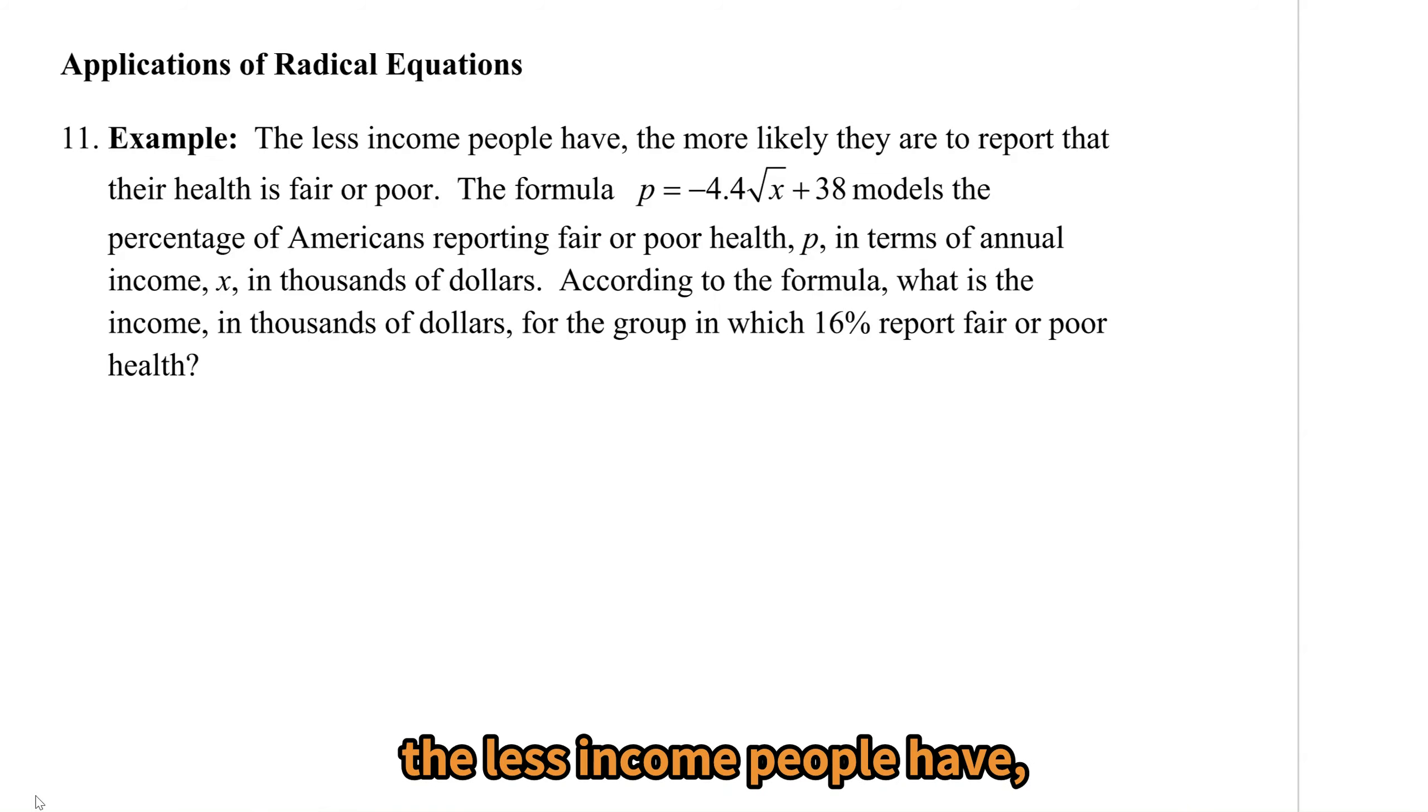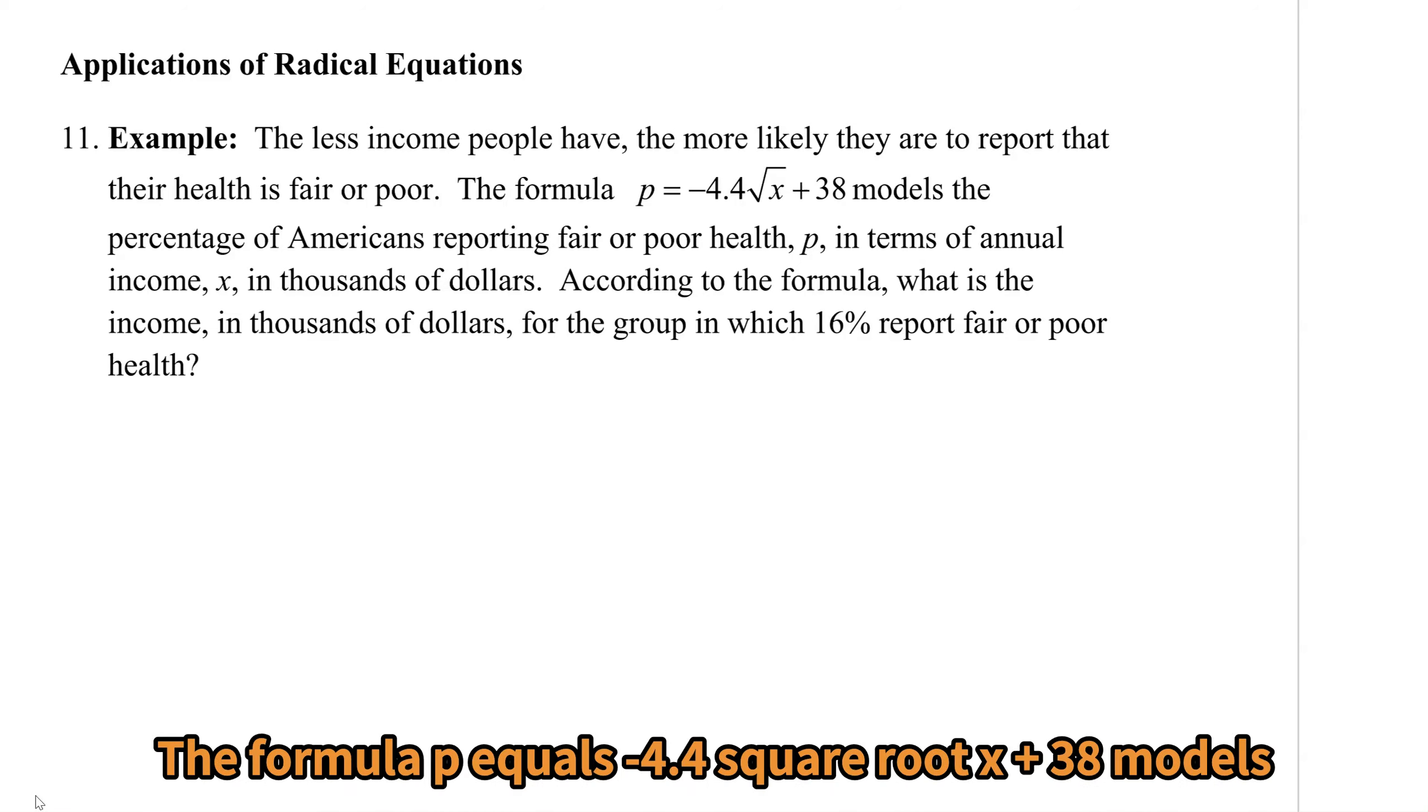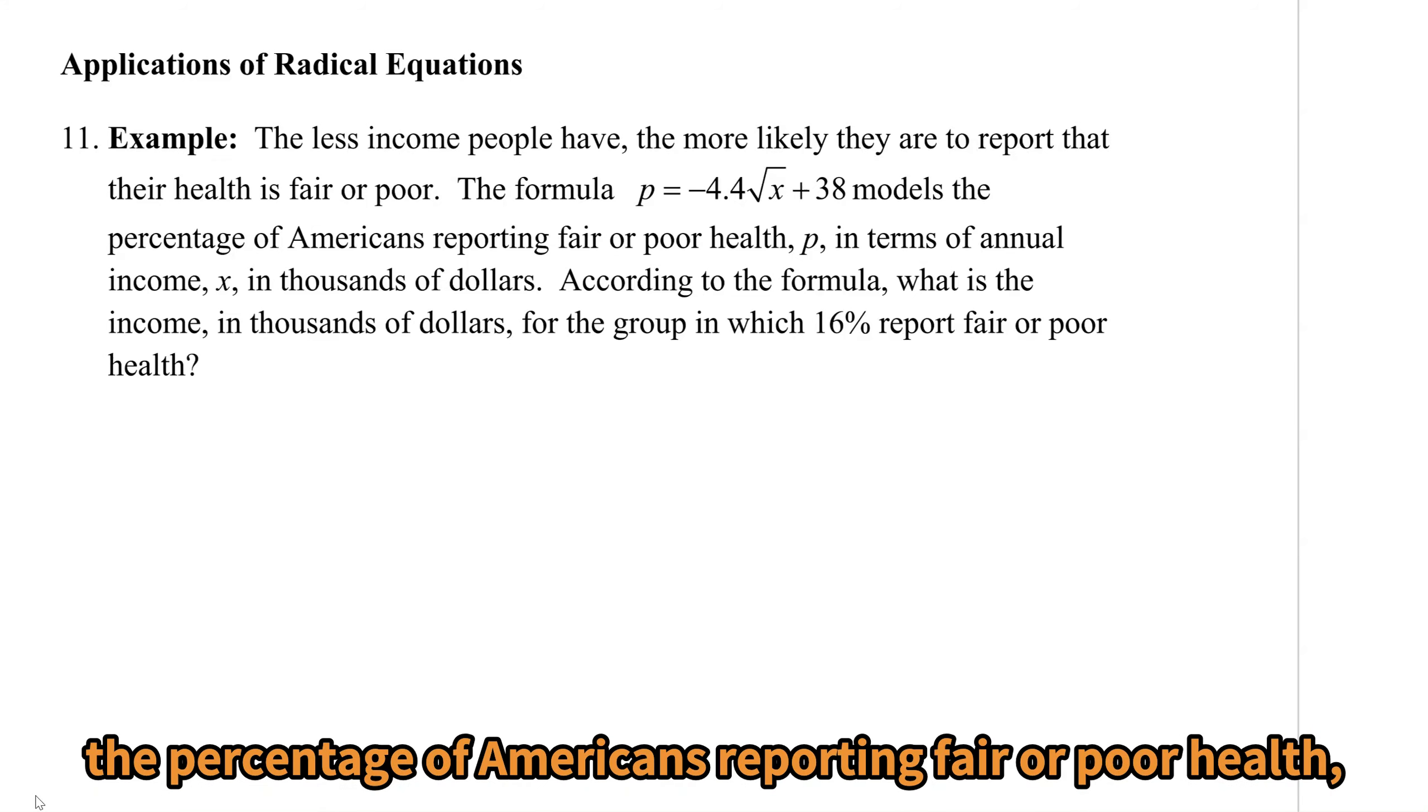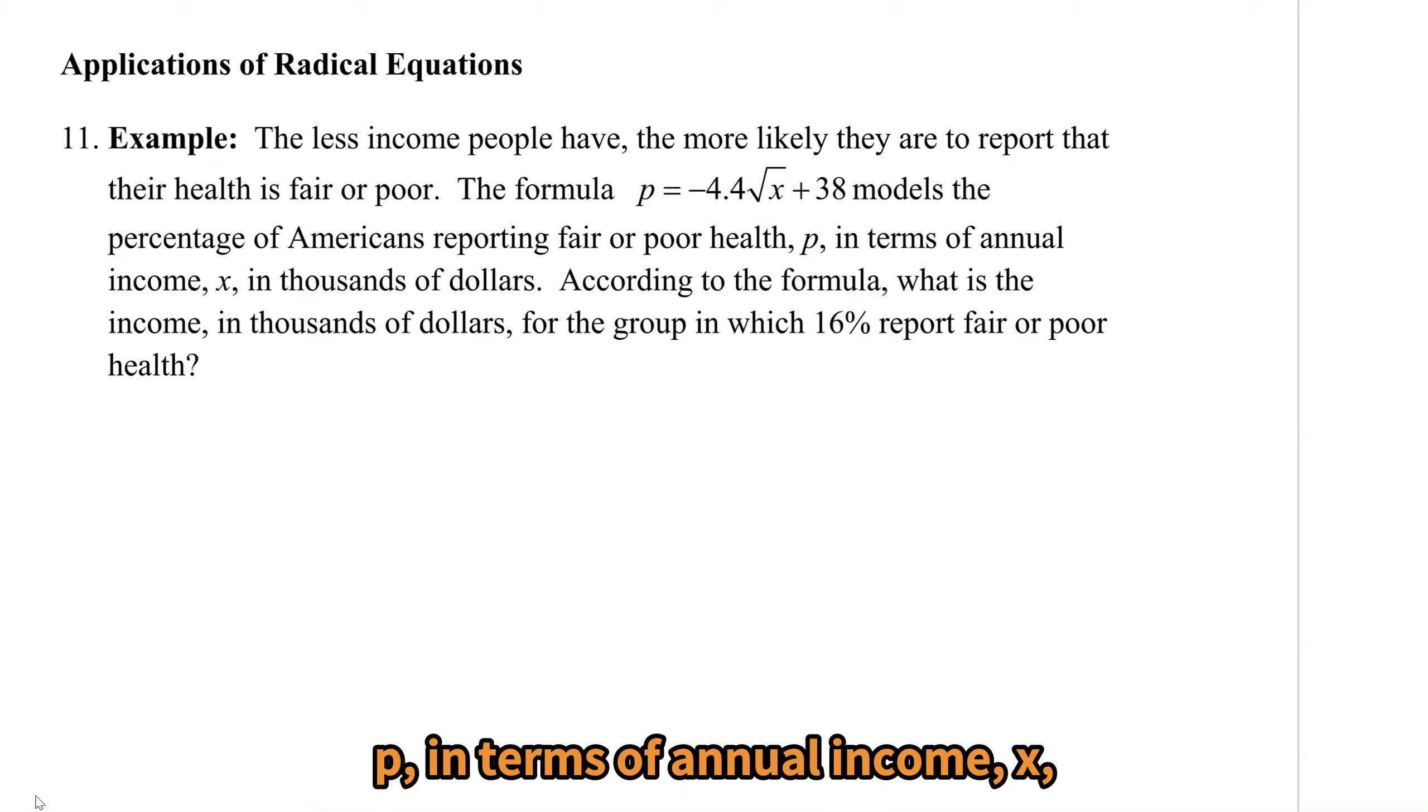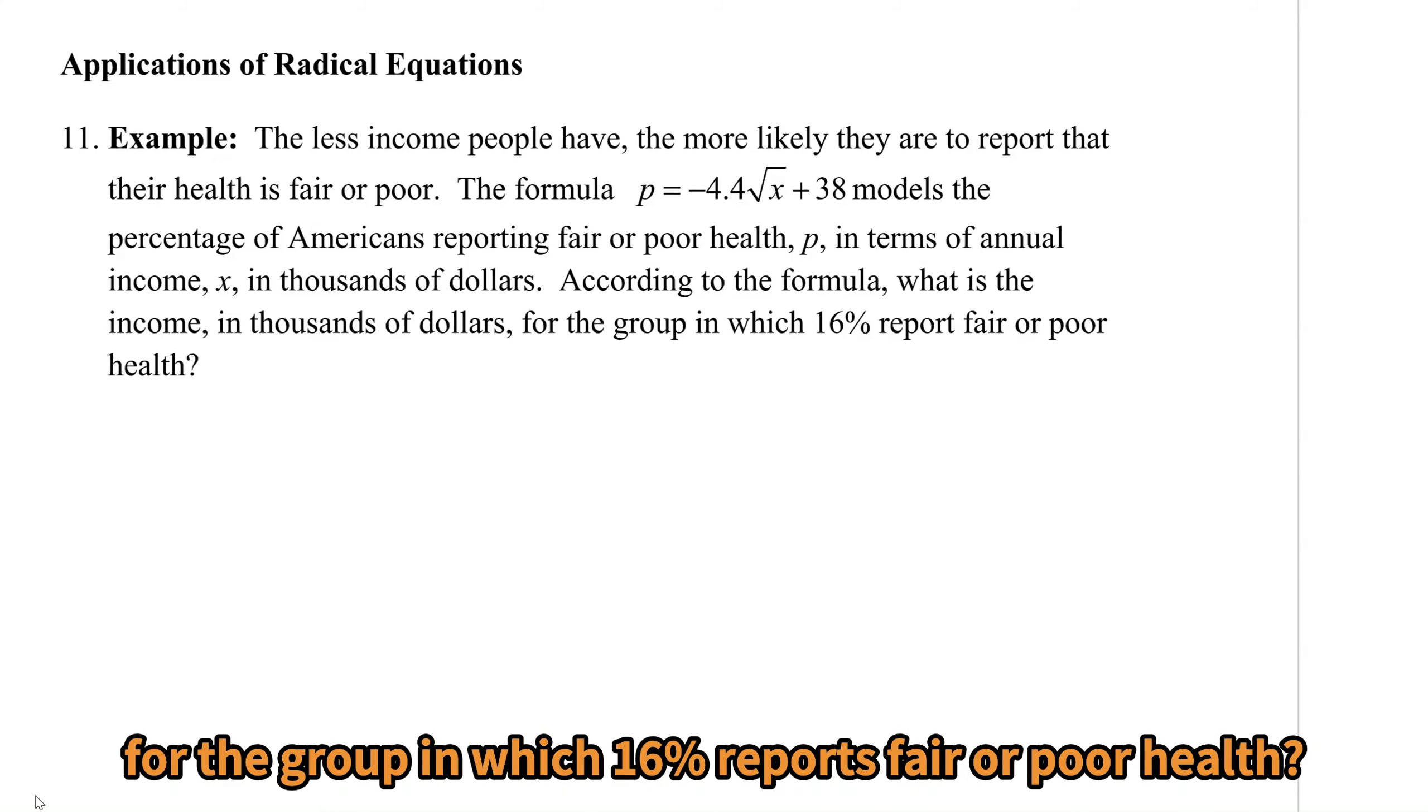In the first example, the less income people have, the more likely they are to report that their health is fair or poor. The formula p equals negative 4.4 square root x plus 38 models the percentage of Americans reporting fair or poor health p in terms of annual income x in thousands of dollars. According to the formula, what is the income in thousands of dollars for the group in which 16% report fair or poor health?